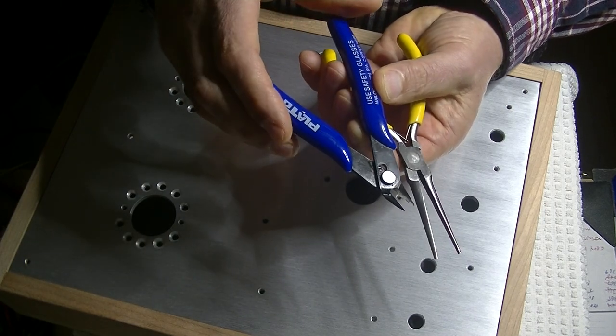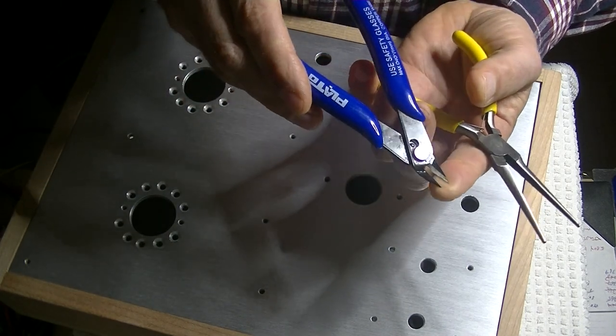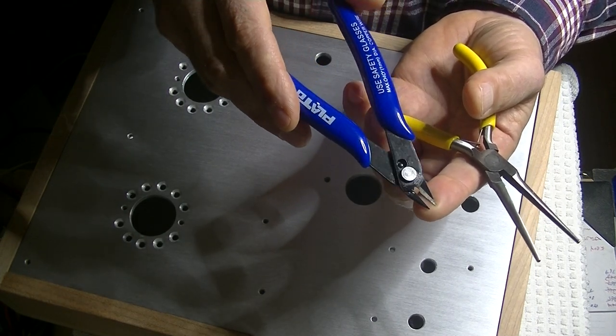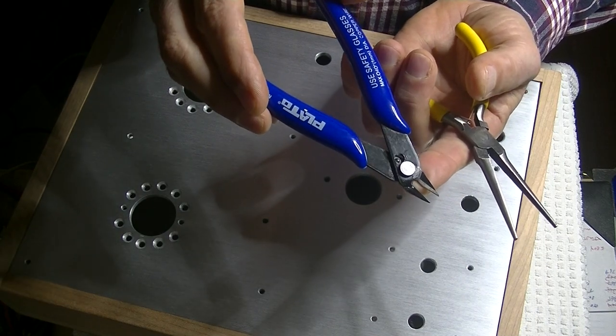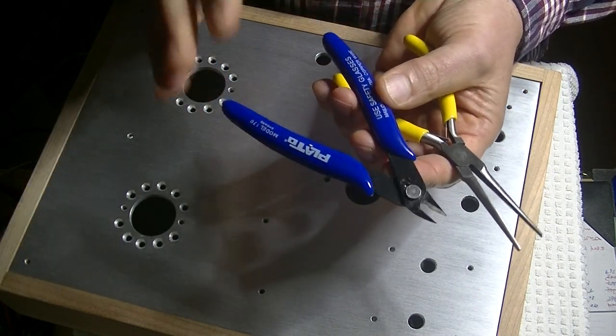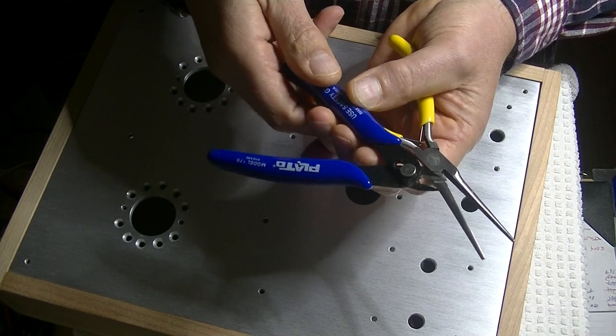And a set of side cutters with very fine nibs at the end are critical whenever you're working on something electrical. Because you can get in really tight and just snip off nice and neatly. Again, these are not expensive. I got a whole bunch of them in.